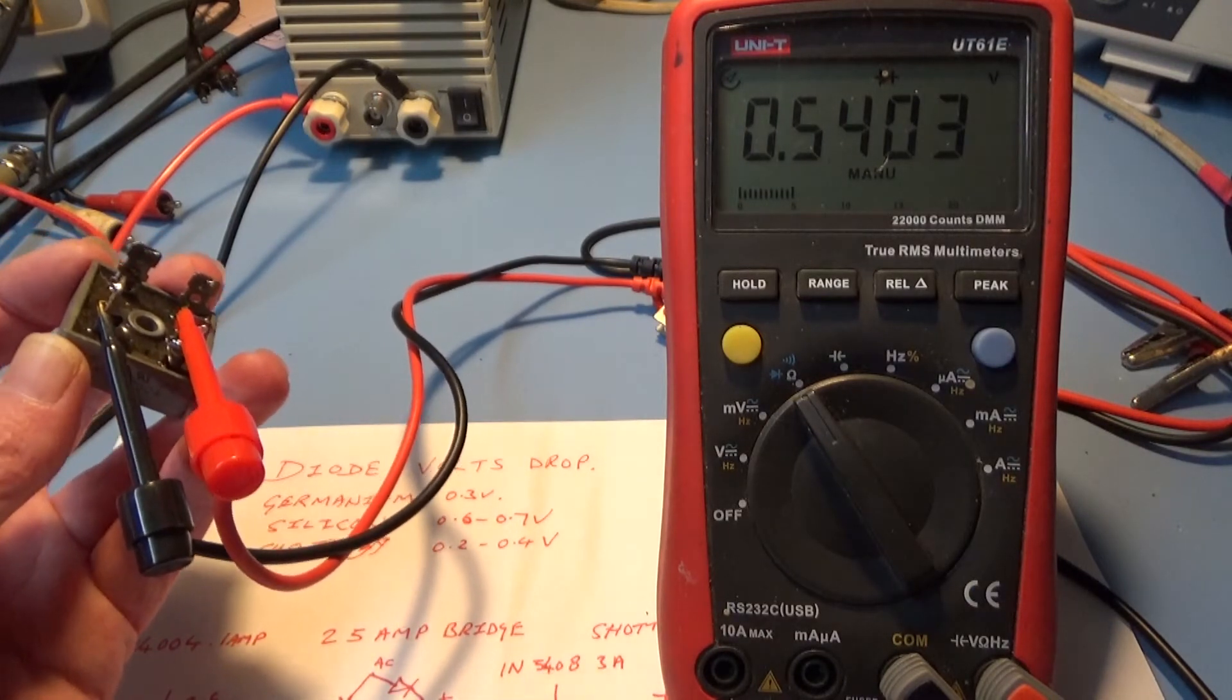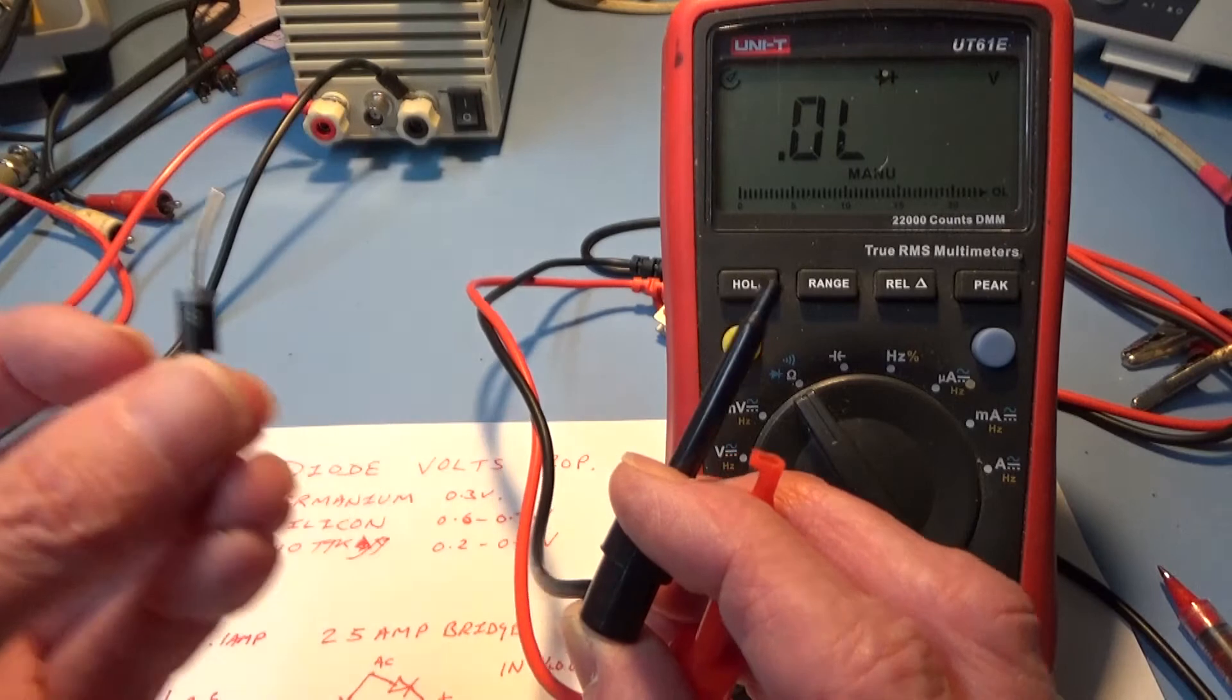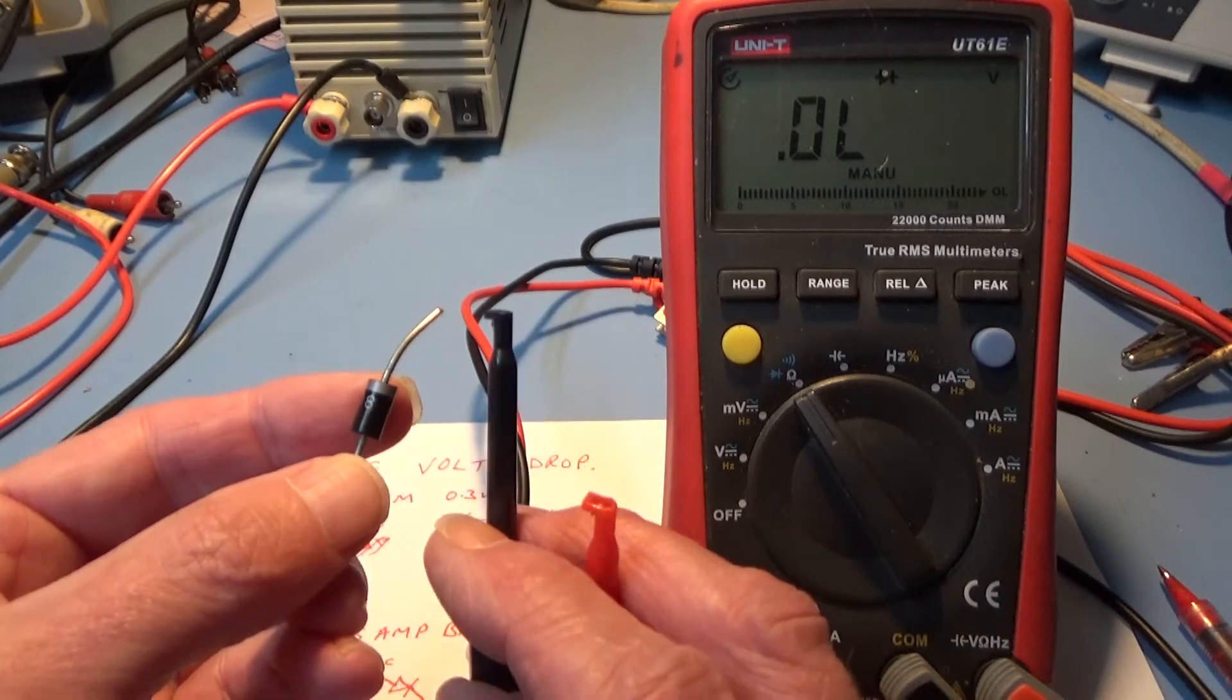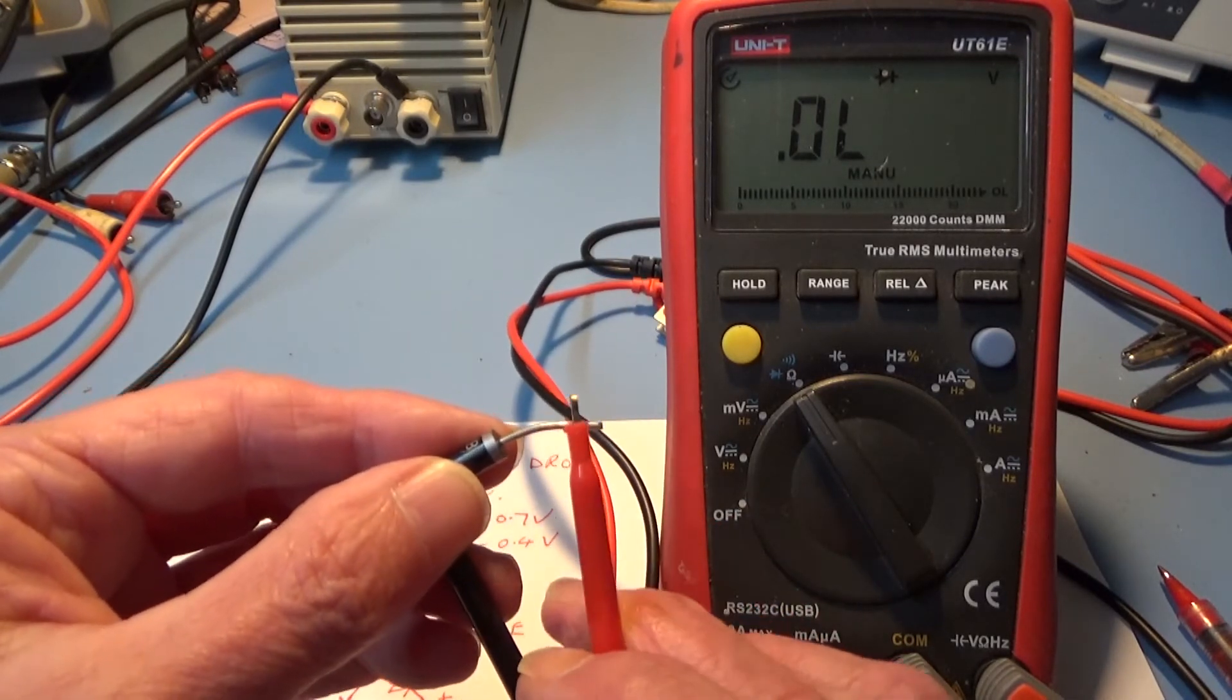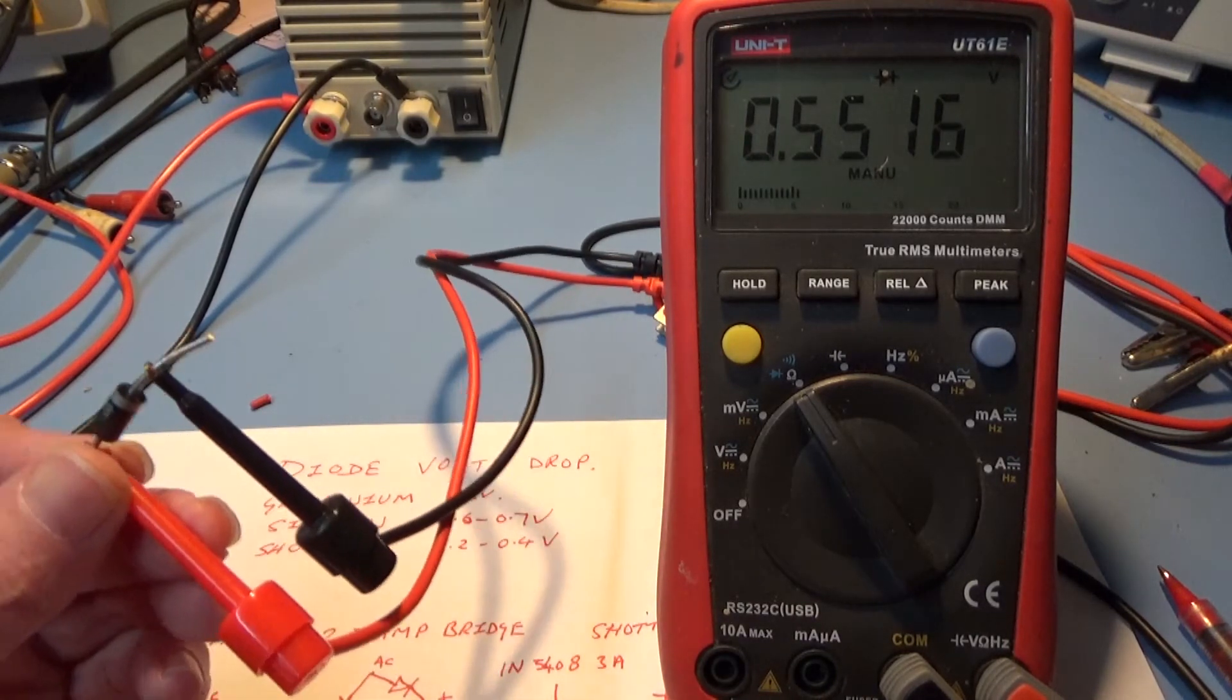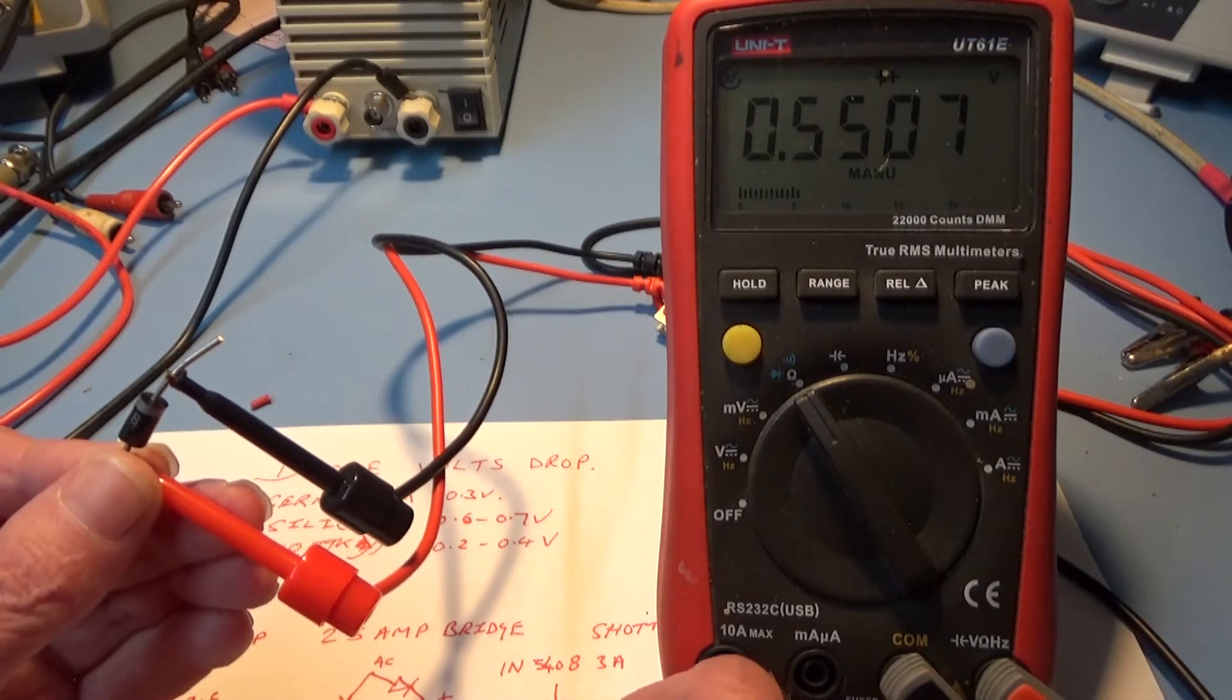Next is the 1N5408 which I think is a thousand volts PIV. Later on I want to stuff five amps through it whether it likes it or not. That's much the same as the last one at 0.55 volts, typical silicon diode.